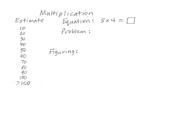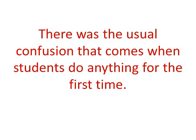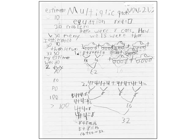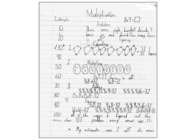Then the students got to work, and what typically happens happened — there's always confusion with things that are new. I circulated, observing and helping; some students need more help than others. Madison used the context of dogs and legs — referring to animals was common among the girls. Thomas stuck with the assignment but worked slowly and struggled; I also noticed reversals, the P in 'multiplication' and the 3 in 32. Using cars or trucks for the story context was common among the boys. Christian was always neat and organized, showing four different ways of figuring labeled counting, multiplying, adding, and figuring. He wrote at the bottom: 'All of the ways I figured out the problem, every answer was 32. My estimate was two off the answer.'